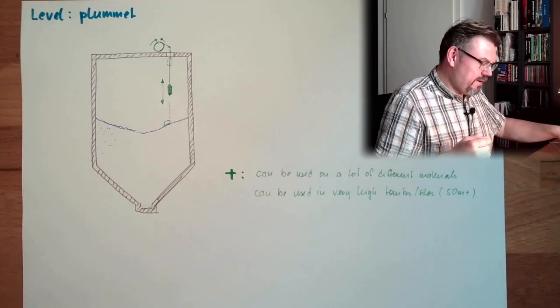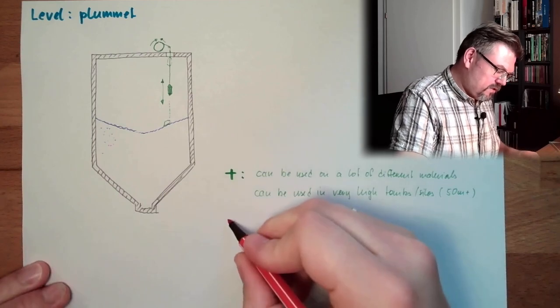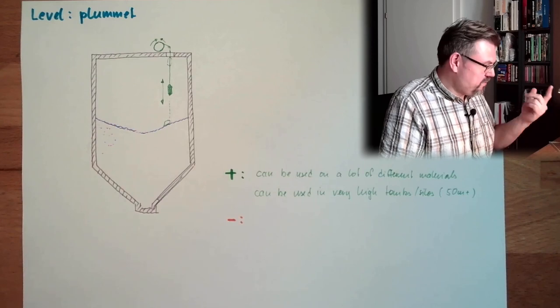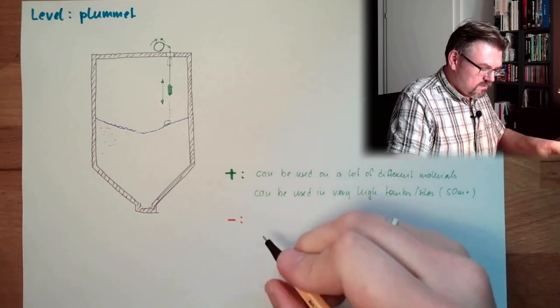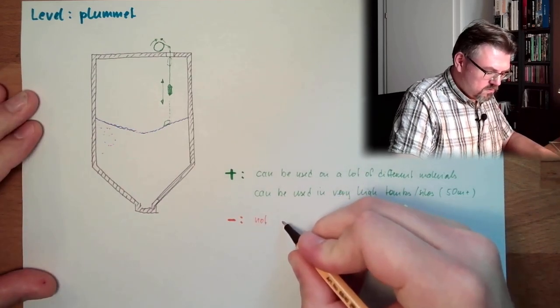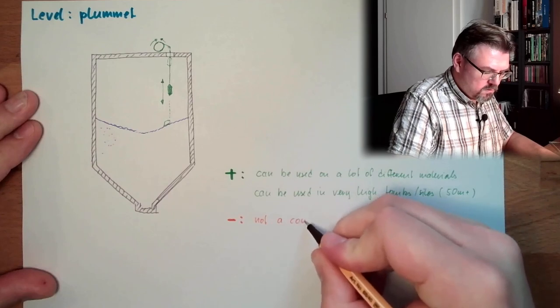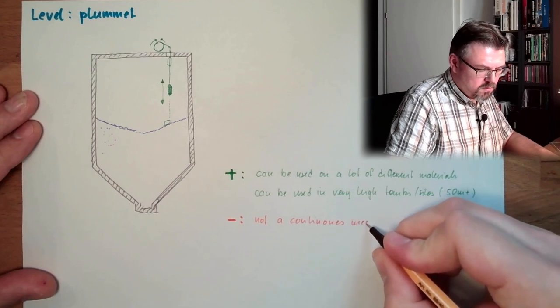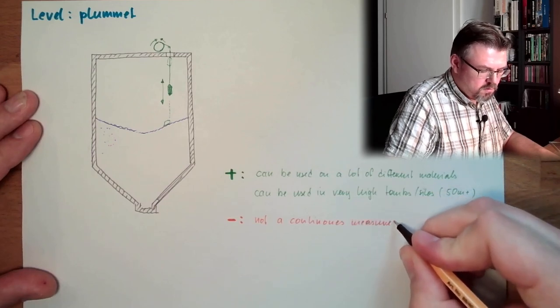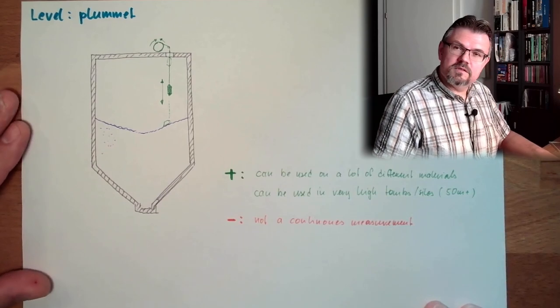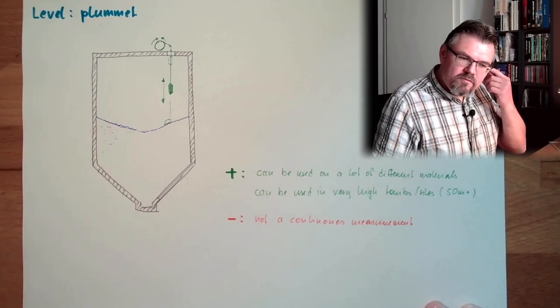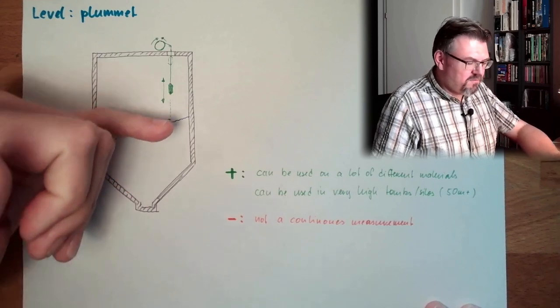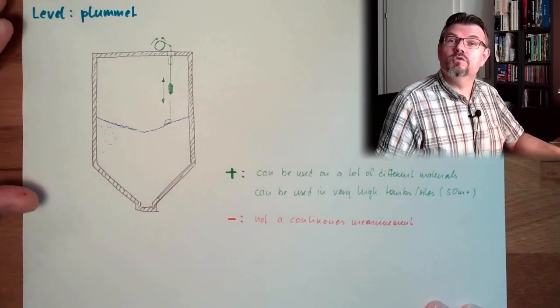What is negative about it, disadvantage, it's not continuous measurement. Not a continuous measurement. So I only have, at certain points, the knowledge about the level. If this is very volatile, this is not suitable.